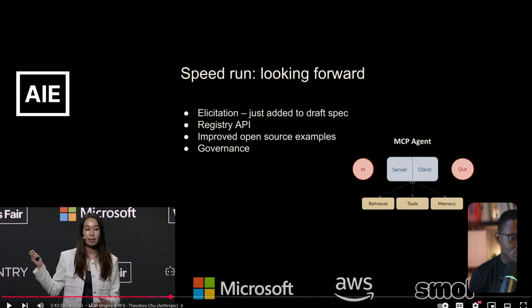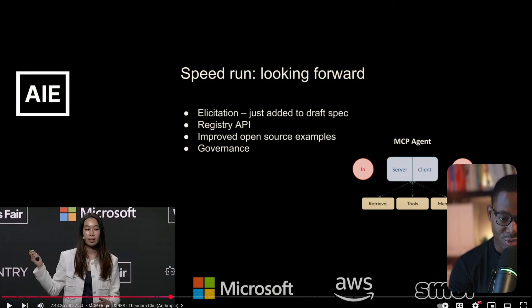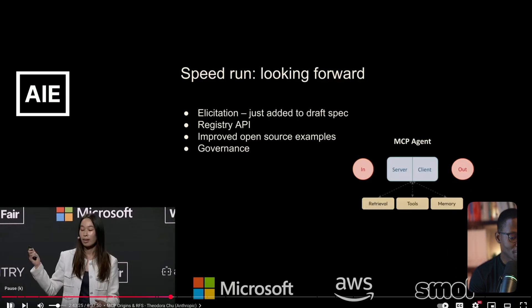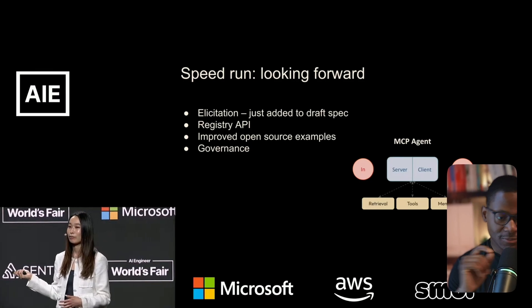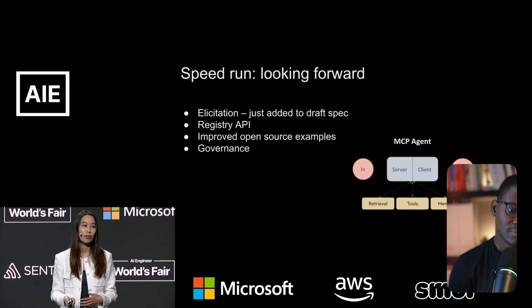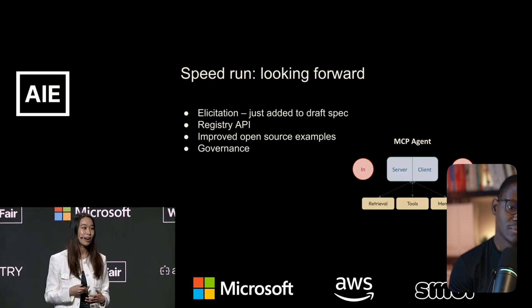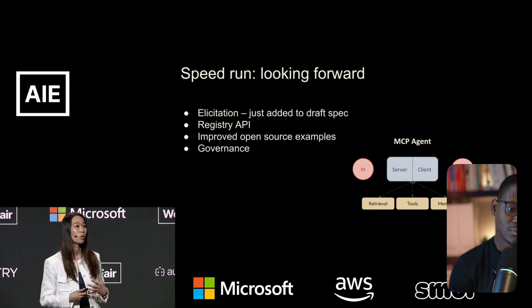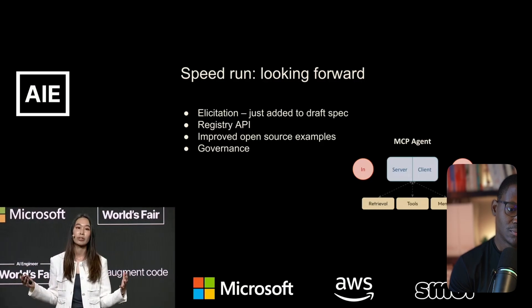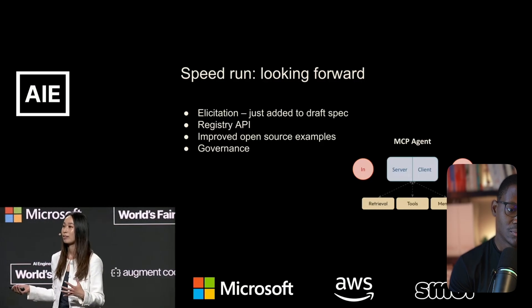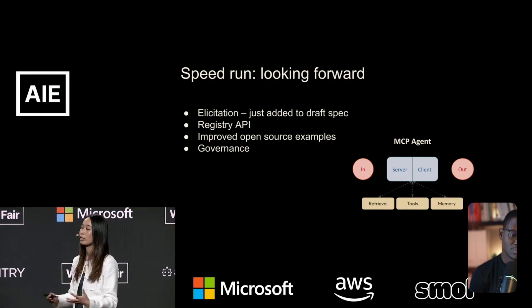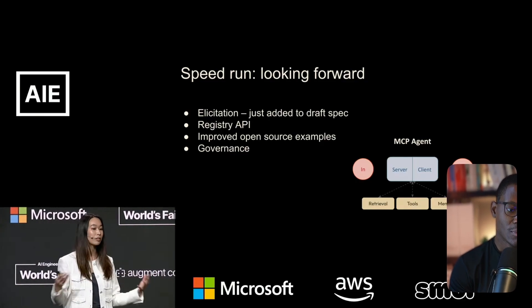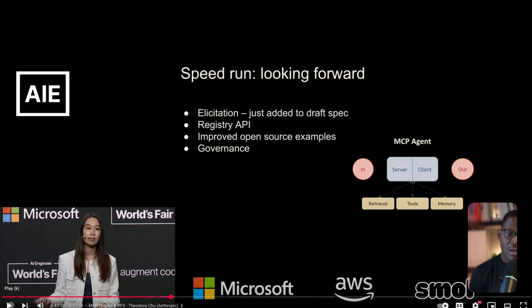A registry and the potential ability to automatically discover new capabilities is a big announcement. On developer experience, they've heard from the community wanting to understand best patterns and standards in the ecosystem, so they want to ensure there are open source examples — both contributed by Anthropic and the community — to help build those standards and patterns together.